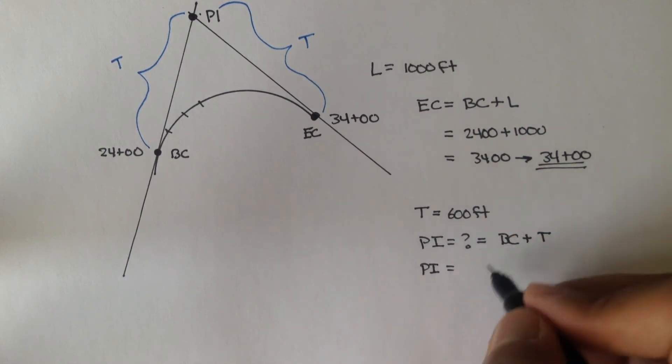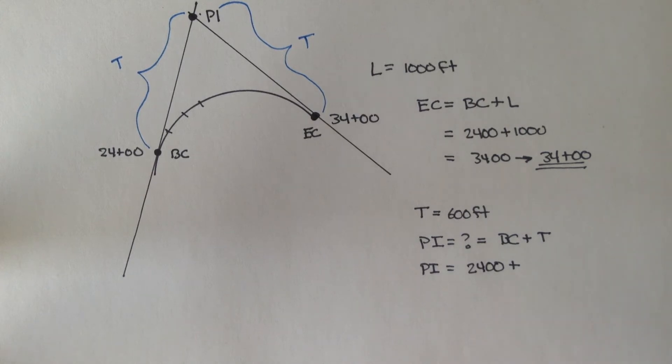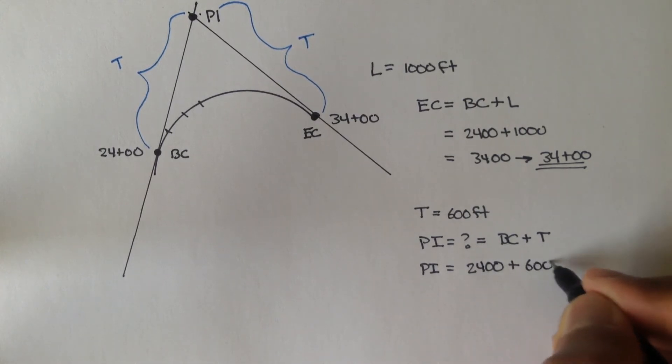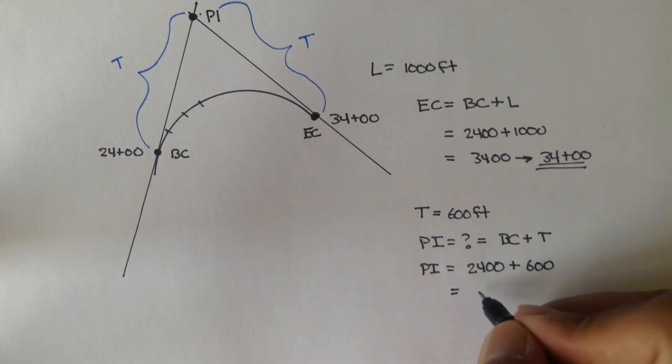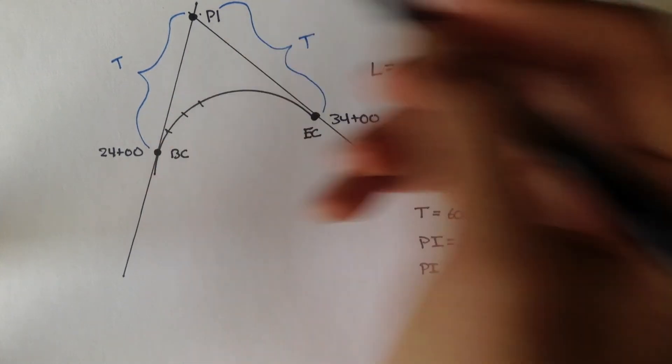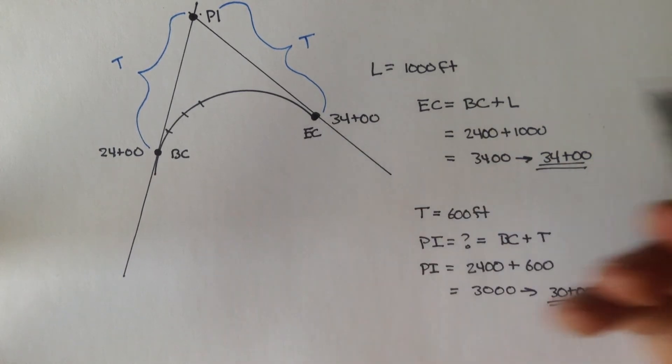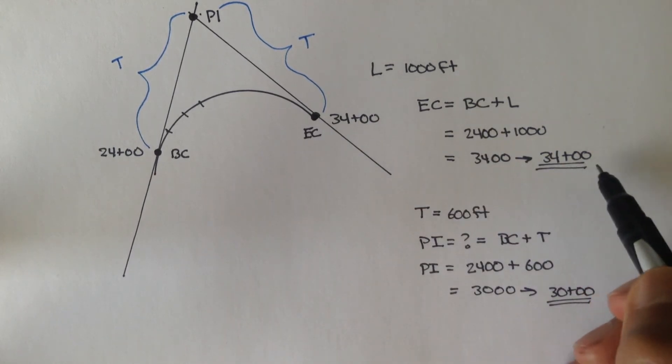So, PI is equal to BC, which is 2400, plus T, which is 600. You should get 3000, right? And in station form, that's 30 plus 0, 0. So, PI is located at 30 plus 0, 0, and the end of curve is located at 34 plus 0, 0.